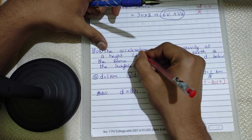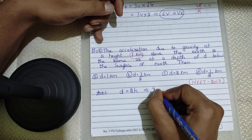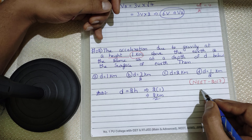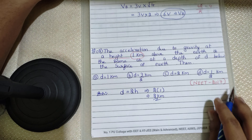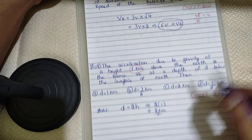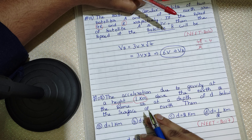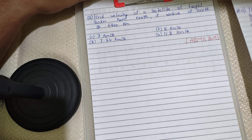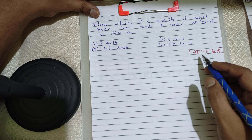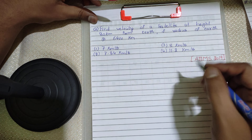The height given is 1 km, so just substitute: D = 2 × 1 = 2 km. This model was asked in NEET 2017, and we solved it in one step in just one second.